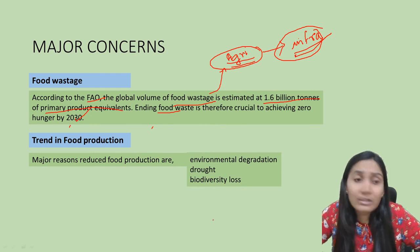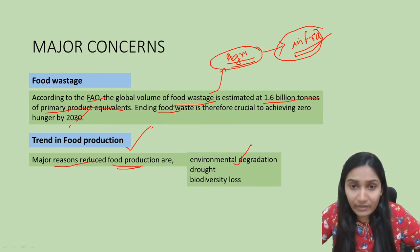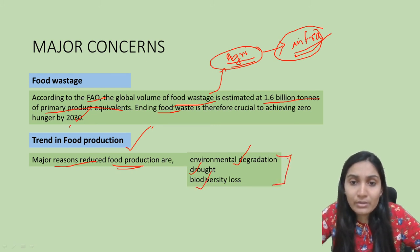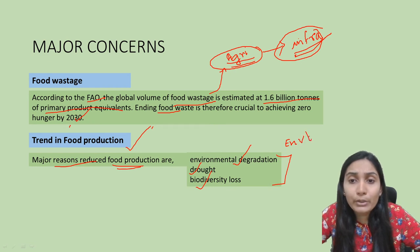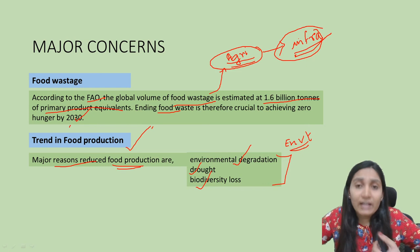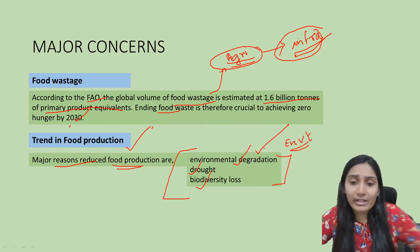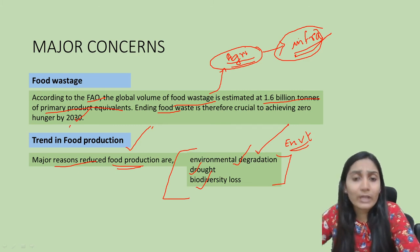Regarding trends in food production, the major reasons for reduced food production are environmental degradation, drought, and biodiversity loss. These are environmental factors resulting from man-made and developmental activities, which have directly impacted agricultural production both in India and globally.